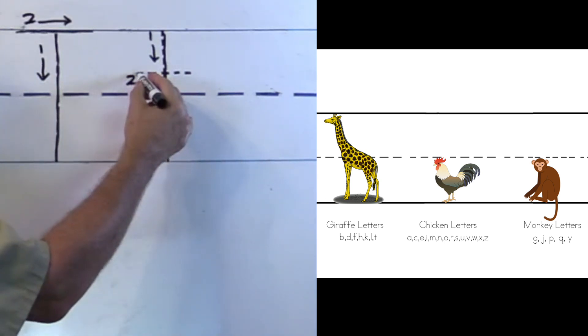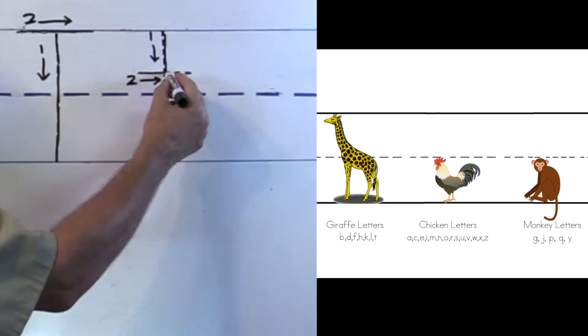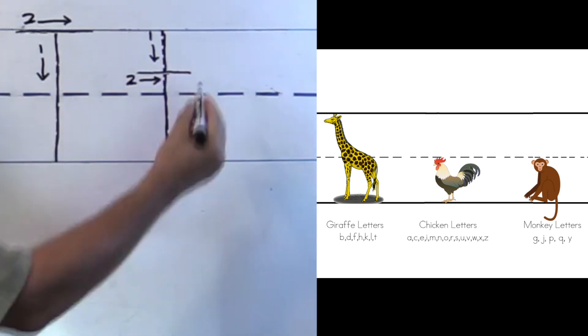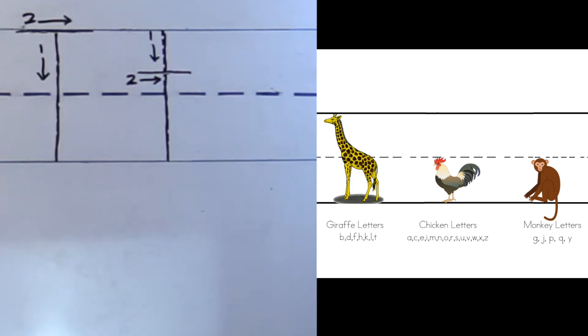Straight down and we stop at the bottom and then we have to do our crossbar. You ready? Come right here and then we go across. Are you ready? Let's go. All the way across and then I stop.